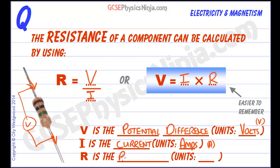And R is the resistance. The resistance is measured in units of ohms and that has a symbol of omega.